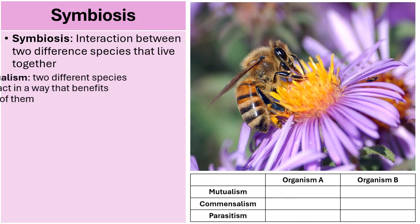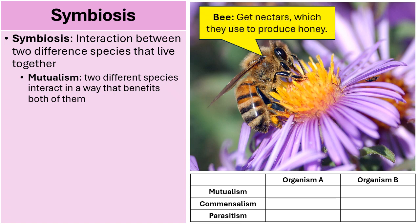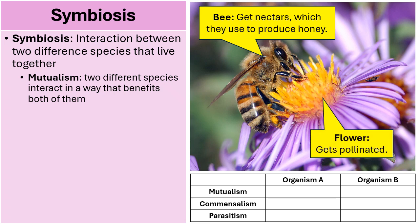Mutualism is a symbiotic relationship where two different species interact in a way that benefits both of them. A great example is the bee and the flower. The bee benefits by getting nectar from the flower, which they use to produce honey, and the flower benefits by being pollinated as the bee buzzes around from flower to flower, spreading pollen and helping the flower reproduce. So they both benefit.